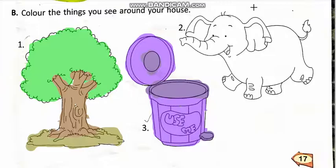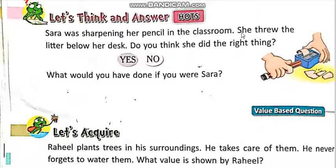Let's think and answer. Sarah was sharpening her pencil in the classroom. She threw the litter below her desk. Sarah classroom mein pencil ko sharp kar rahi hai, woh desk ke neche litter — kachra — phenk ti hai. Do you think she did the right thing? Kya usne sahih kaam kiya? No. Kachra failana toh buri baat hai — kachra ko dustbin mein phenkna chahiye.